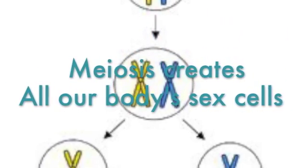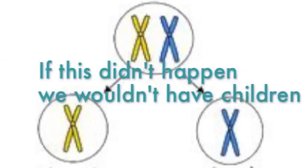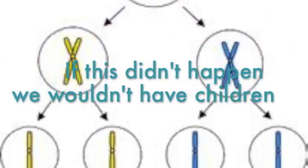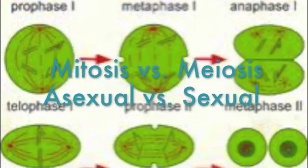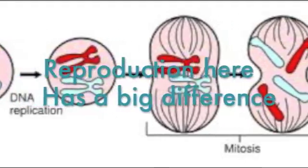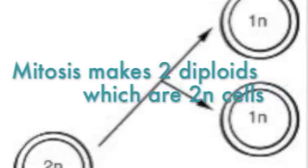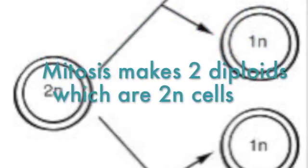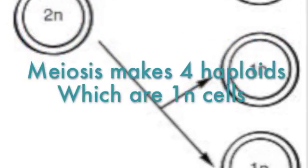Meiosis creates all our body's sex cells — if this didn't happen we wouldn't have children. Mitosis versus meiosis: asexual versus sexual reproduction. Here's a big difference: mitosis makes two diploid cells, meiosis makes four haploid cells.